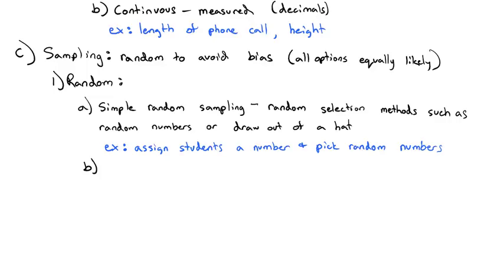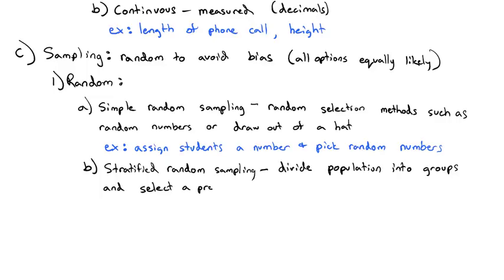A second type of random sampling is what is called stratified random sampling. And this is when we divide the population into groups. Each group is called a strata, and then select a proportionate number of each group.